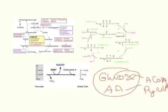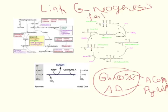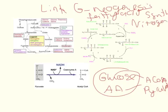In summary, acetyl-CoA and/or pyruvate are the two molecules that can link gluconeogenesis, fatty acid synthesis, nitrogen metabolism, and the TCA cycle. We might also add that they can link the production of amino acids — so amino acid synthesis as well.